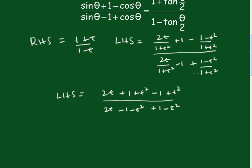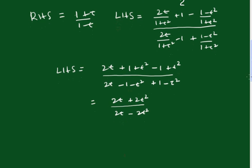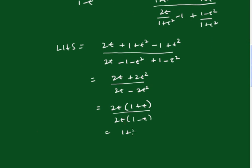The common denominator is (1+t²). The numerator becomes 2t plus (1+t² minus 1 plus t²), which tidies to 2t plus 2t squared. The denominator becomes 2t minus 2t squared. Factoring out 2t gives (1 plus t) over (1 minus t), which equals the right-hand side.